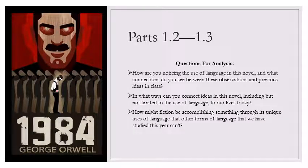So today, like I said, we're reading chapter one, parts two and three. We have three questions for analysis. So how are we noticing the use of language in this novel? I think last time I mentioned visual language can be an element of that. And what connections do you see between those observations and previous ideas in the class?